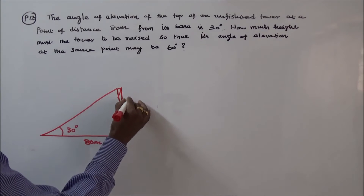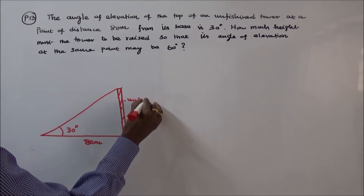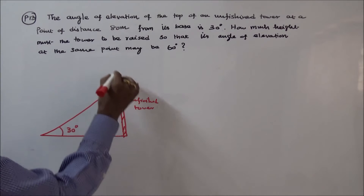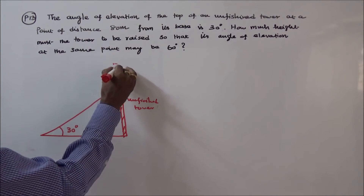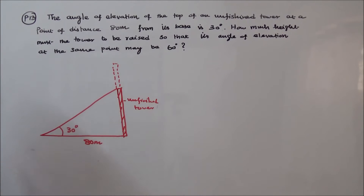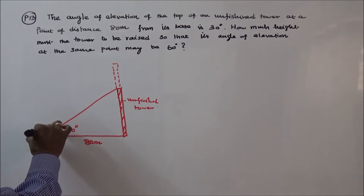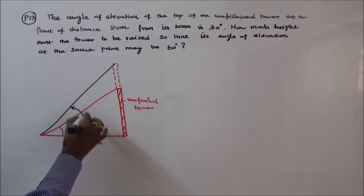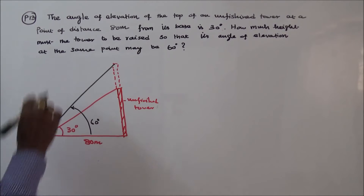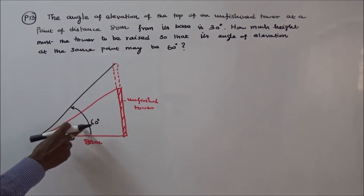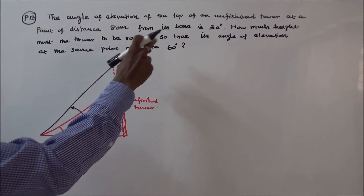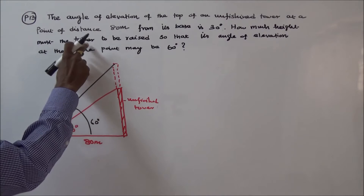So this is the unfinished tower. I want to raise this. The elevation at the current height is 30 degrees, and after raising it will become 60 degrees. The question is: how much height must the tower be raised?